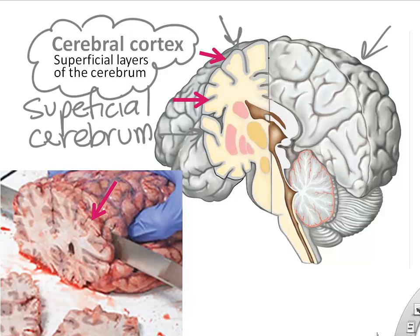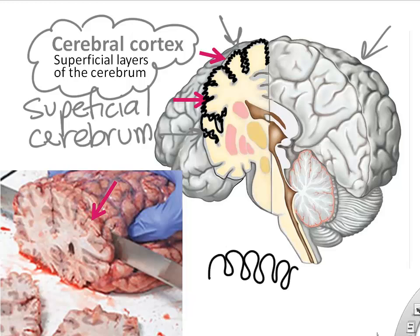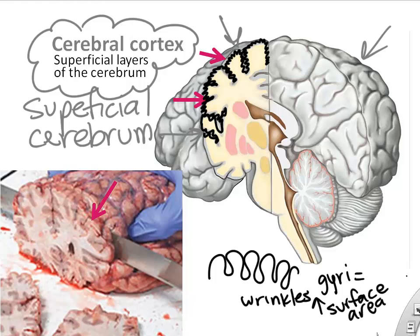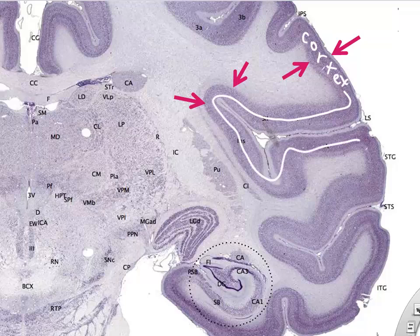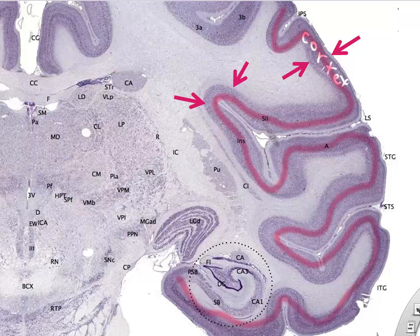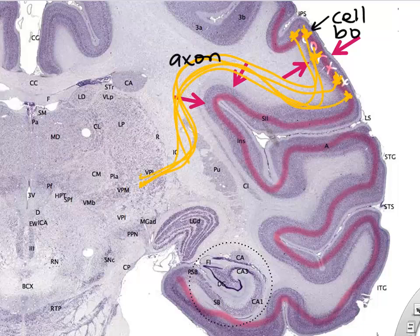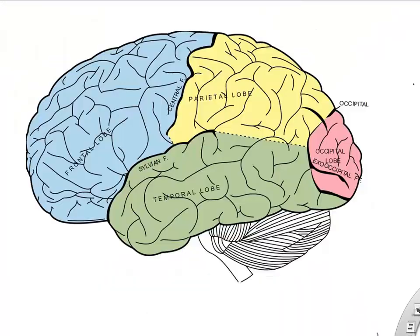The cerebral cortex is the outer shell of the cerebrum and it's all wrinkled — those wrinkles increase surface area, packing in more neurons for greater processing power, like a better computer. The cerebral cortex is darker, meaning it has lots of cell bodies, while the white matter underneath in the cerebrum is lots of axons. Most of what you're conscious and aware of in your brain takes place in the cerebral cortex.